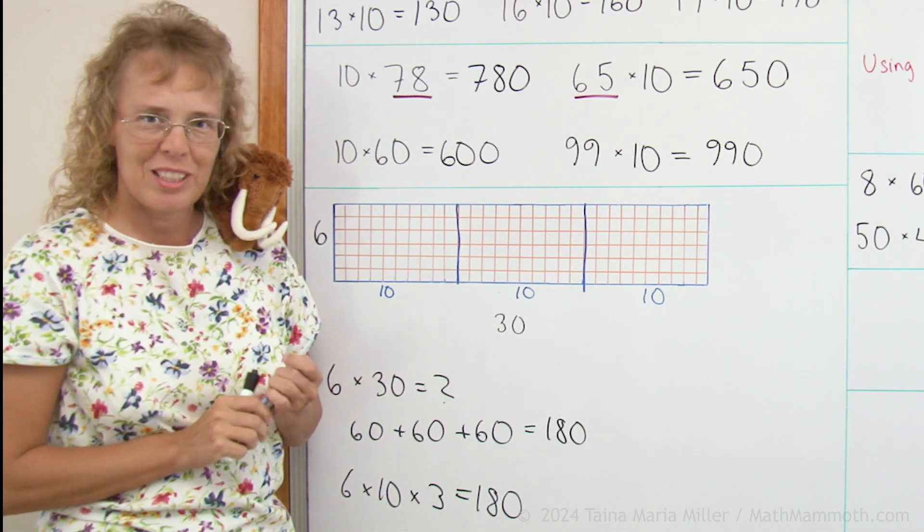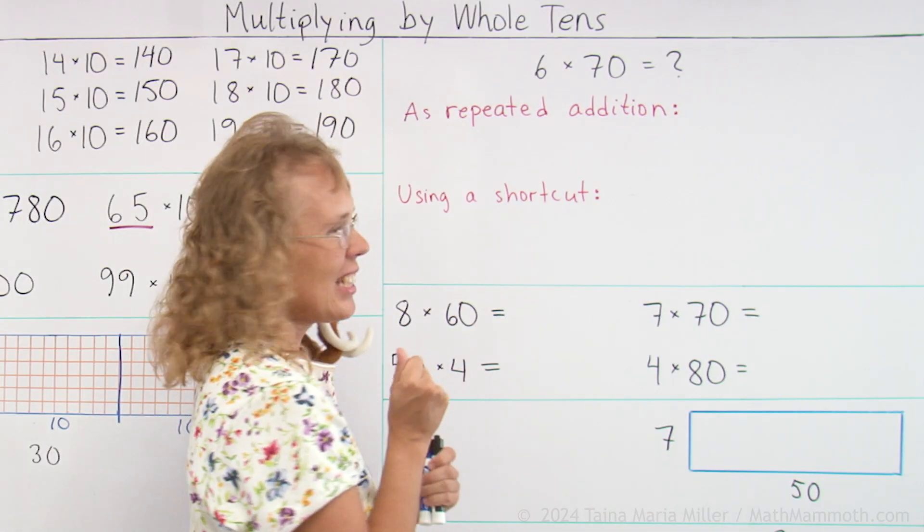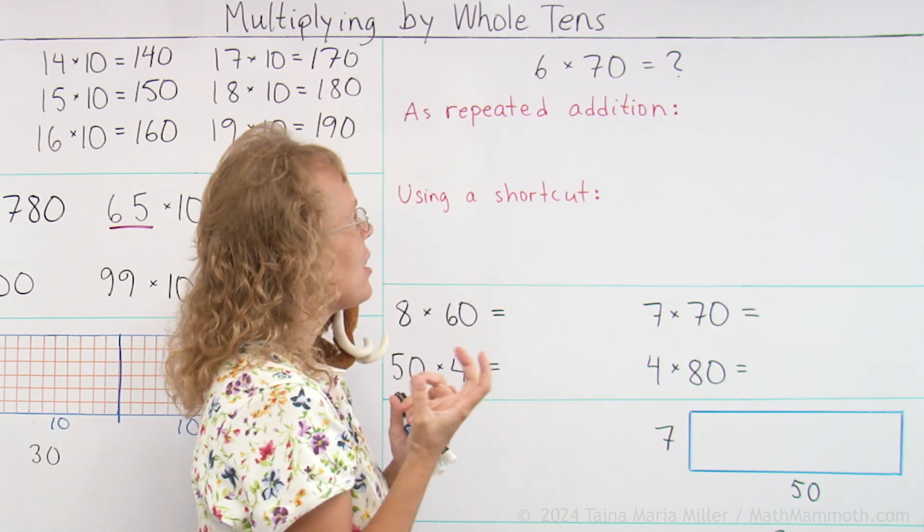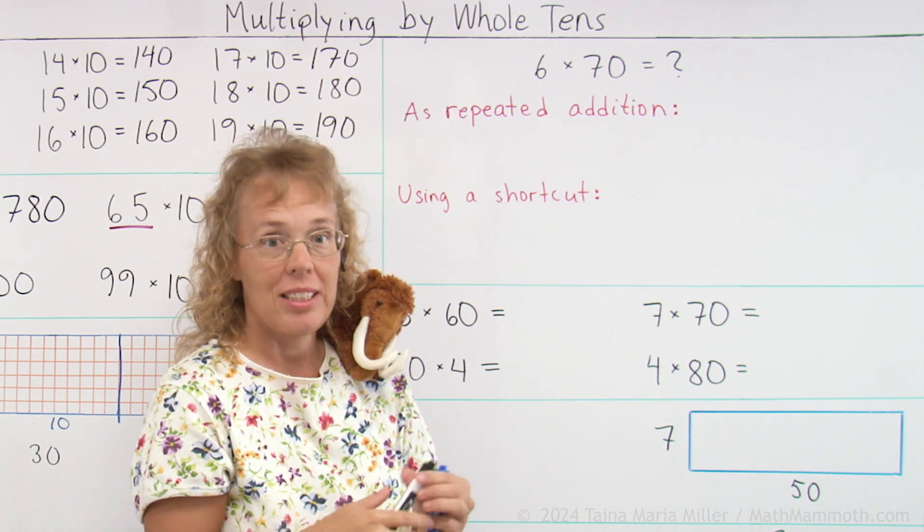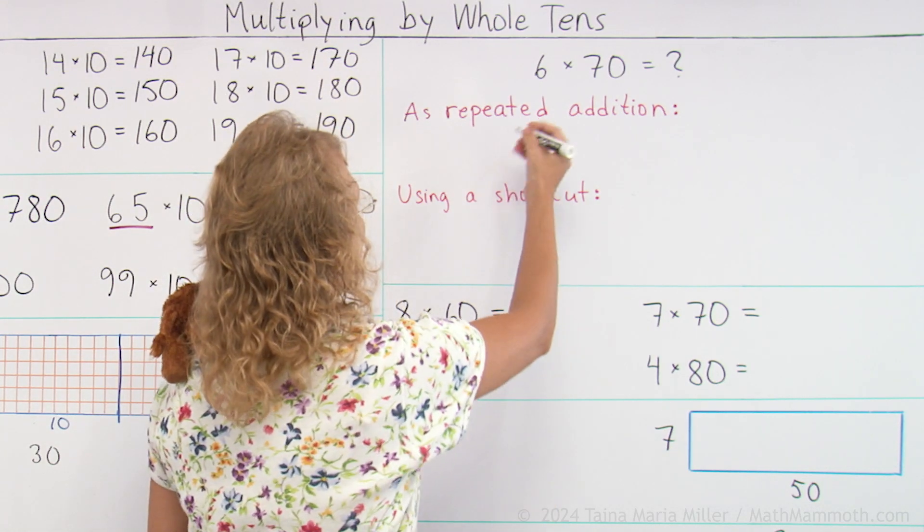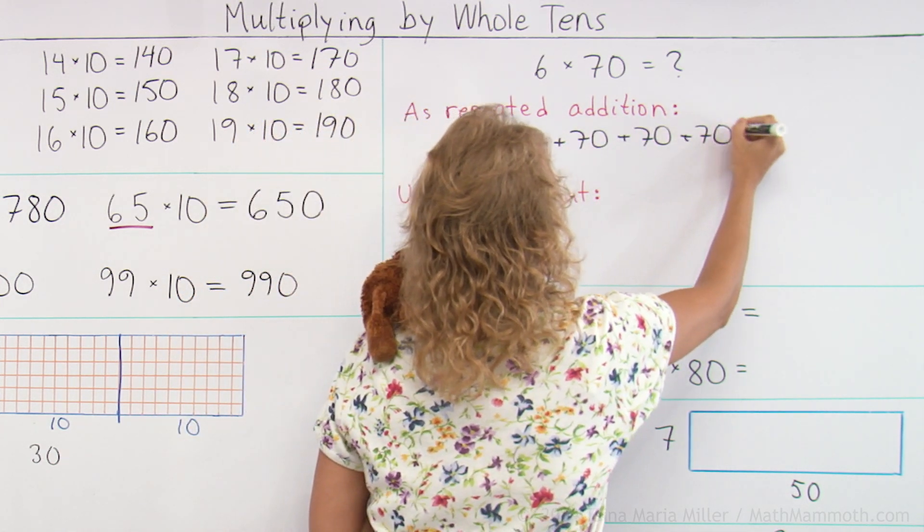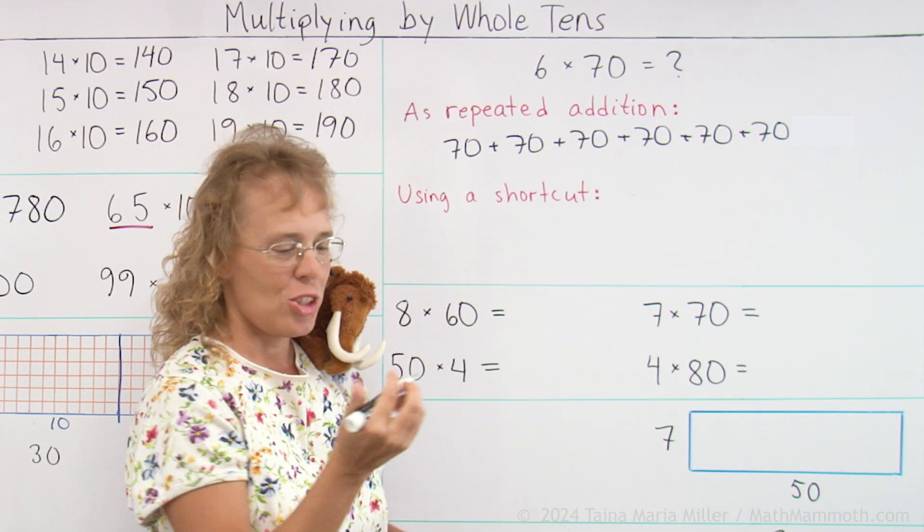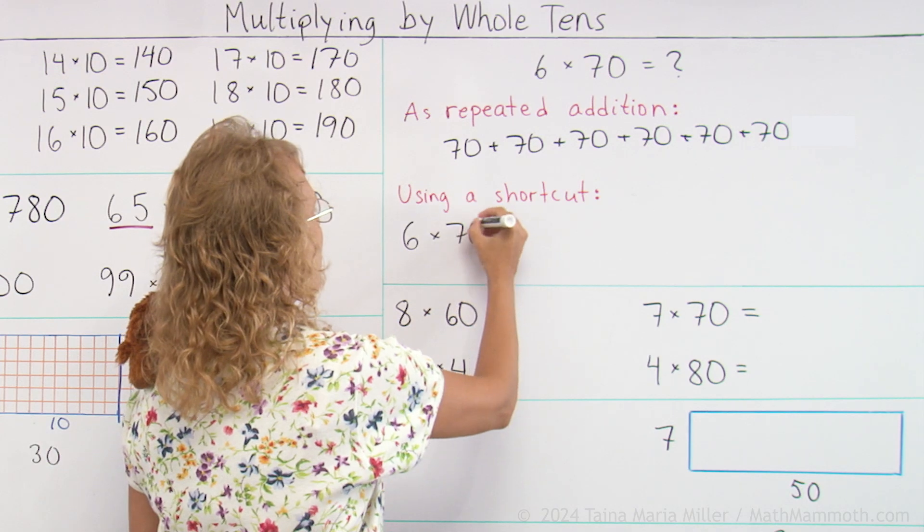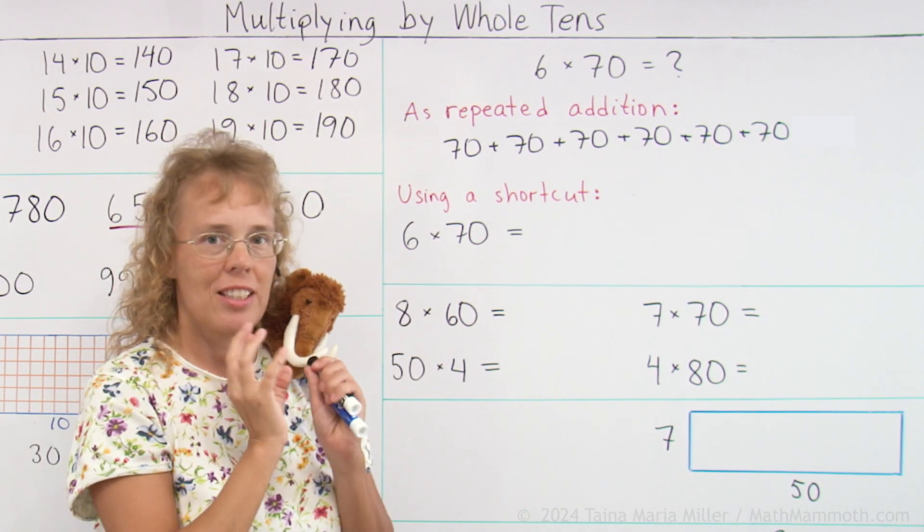Let's go on and look into this idea a little bit more. If I have 6 times 70 to solve, there's several ways to solve it. One is repeated addition, just like I showed you with that big rectangle. I can take 70 and add it 6 times. Another one I show you, it's going to be a shortcut for us.